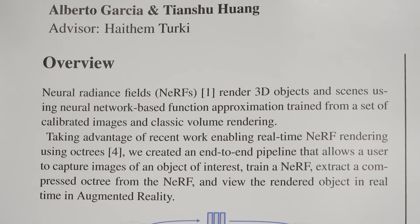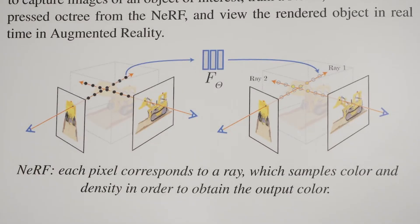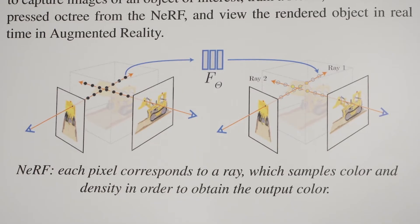What is a NeRF? A NeRF is a neural radiance field. It's a technique for rendering 3D objects using neural networks. The idea is that you take a whole bunch of images of an object or scene from all different directions, then you train a neural network — in this case a multi-layer perceptron — to predict the color and density at given points within the object.